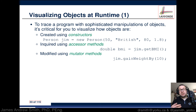We can also have something called a mutator method — which sounds like something out of a Marvel superhero movie — but basically all it is is changing the characteristics that Jim has. It's a modifier method. For instance, Jim the object can gain weight by a certain amount, so we could have a method called gainWeight that increases Jim's weight by 10 kilograms, updating or mutating the object.